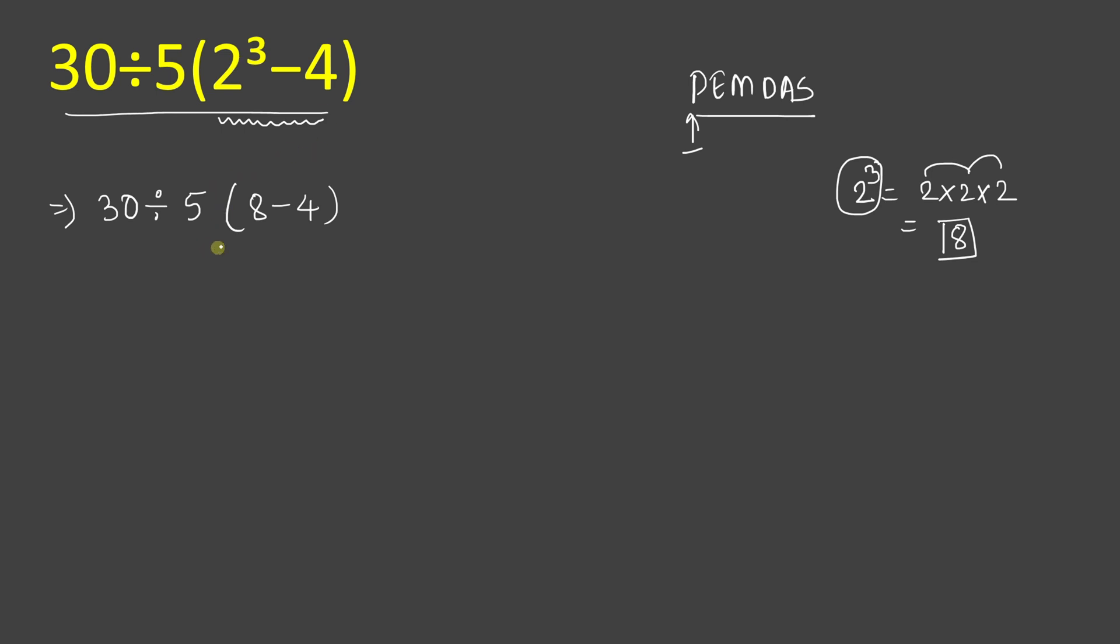This will be easier to solve and again we will follow order of operations. Again this parenthesis part - 8 minus 4 - this will give result 4.